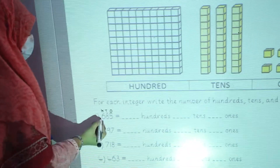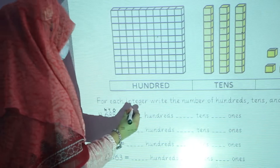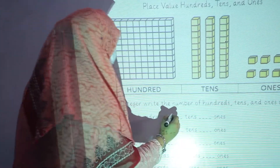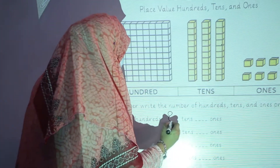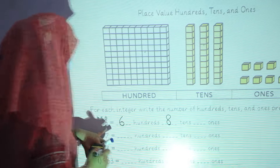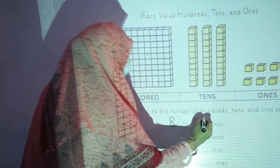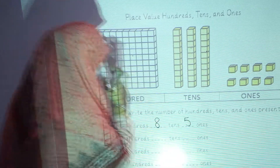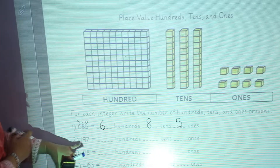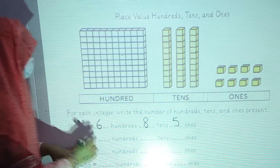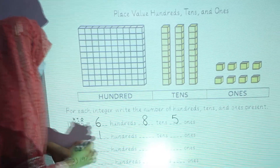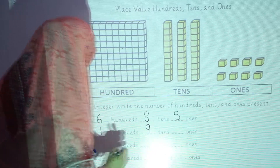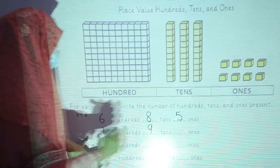How many hundreds are there? 6. You will write 6. How many tens are there? 8. And how many ones are there? 5. In the second question, how many hundreds are there? 1. 9 tens and 7 ones.